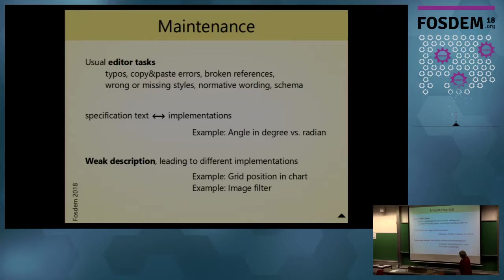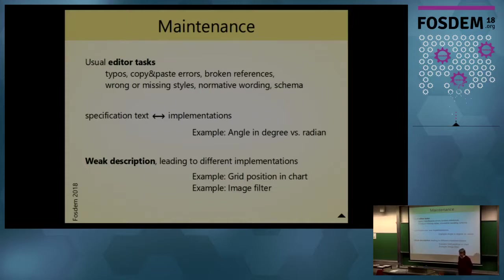The next items address content problems which come into view by comparing programs. For example, all implementations use angles in radians, but degrees are specified — this case is easily solved, and we will adapt the specification. More difficult are cases where the implementations differ. We might solve it by introducing new elements and attributes, or by making one behavior standard for ODF 1.3, which requires changes in other applications. There exist rules for voting, but of course we try to find consensual solutions.